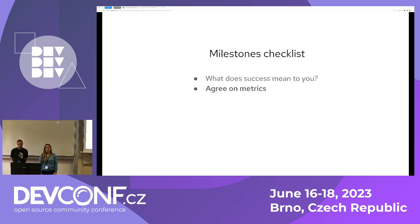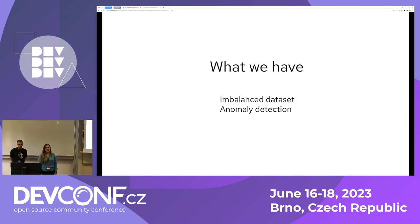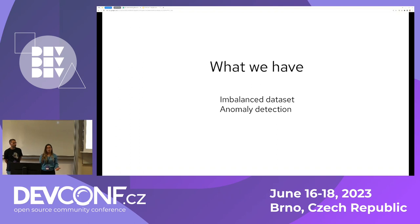The choice of metric deserves its own talk, but in our case, your metric will depend on the problem you're trying to solve and the data you have. We have way more upgrade successes than upgrade failures, and we don't really care about predicting upgrade successes — just like with the car checkup, who cares if it's successful. We really want to know what will fail. So we have an anomaly detection type of problem.